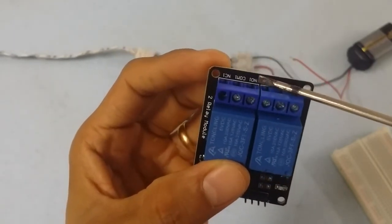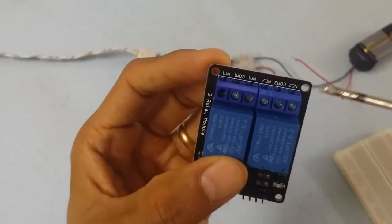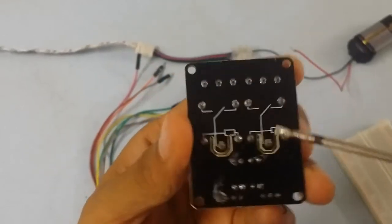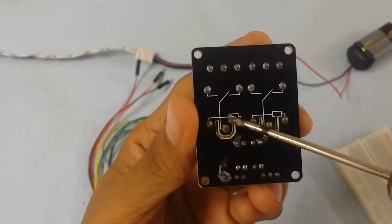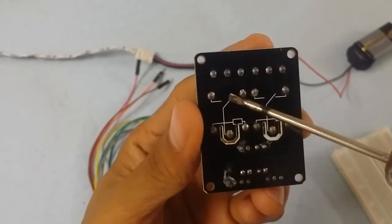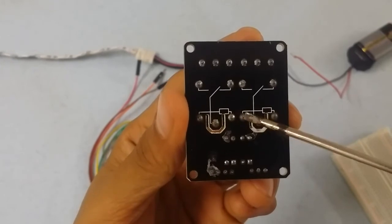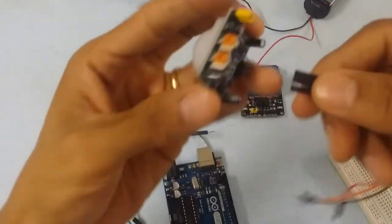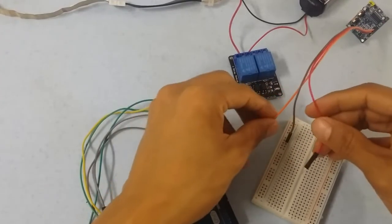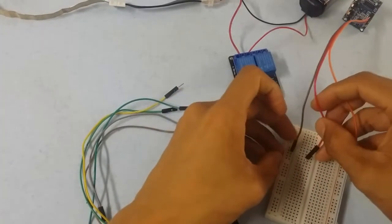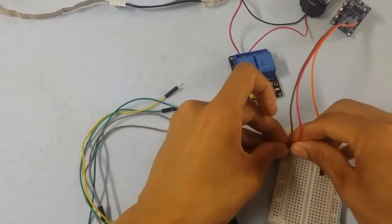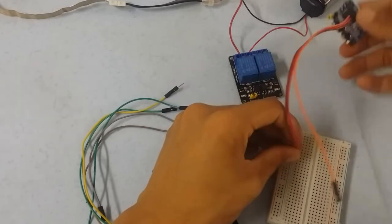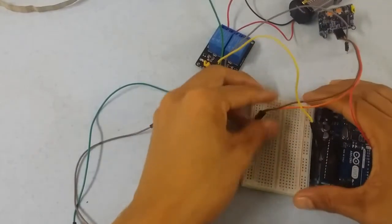Now the relay has two channels connected to the motion sensor. The VCC is connected to power, and the output goes to the digital pin on the Arduino.